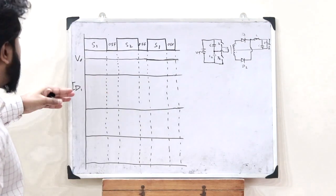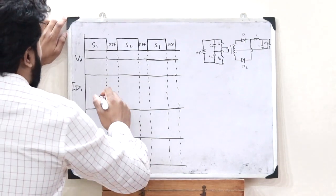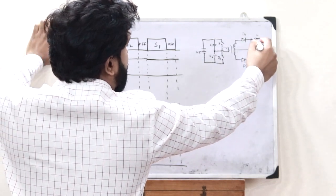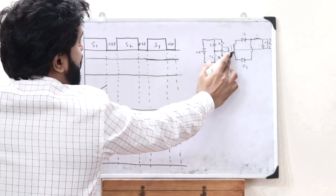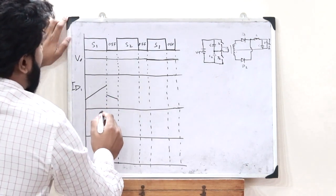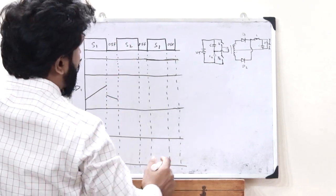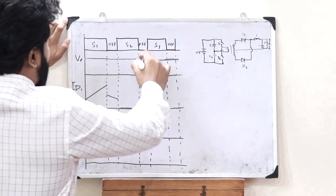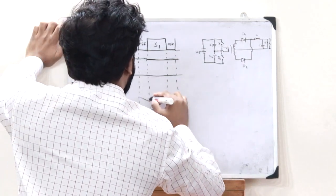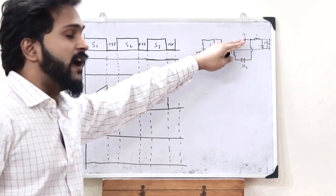Next, let us see the diode current ID1. When S1 is on, D1 is forward biased and current increases from a minimum to a maximum value. When both switches are off, the inductor and capacitor discharge and the current splits — half going through D1 — so half the current decreases. When S2 is on, no current passes through D1. When both switches are off again, half the value flows through D1 and decreases. Joining these gives the complete waveform for diode current D1.